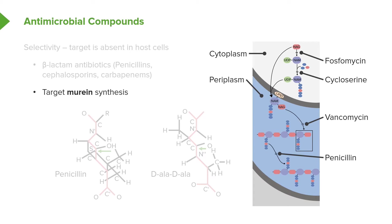We have developed over the years antibiotics that target different steps in the synthesis of murein, including penicillin, which targets that last step — assembling the cross-linking amino acids between the sugar chains.